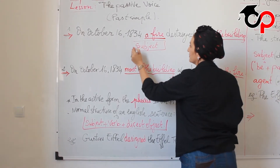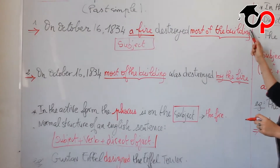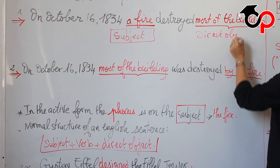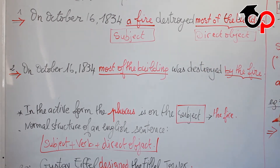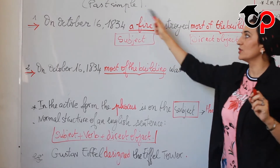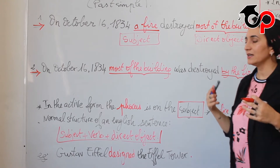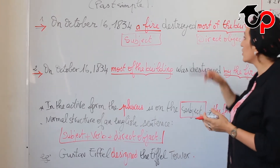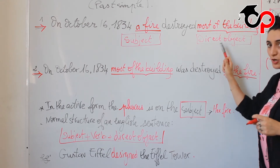The subject. The fire destroys most of the building, which is the direct object. So here, as I said, the most important is the subject — we focus on the subject, the fire. Now, when we want to express the idea in another way, we want to emphasize on the direct object. Put emphasis.